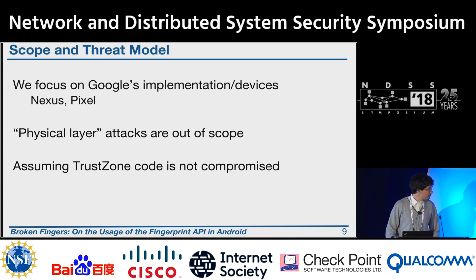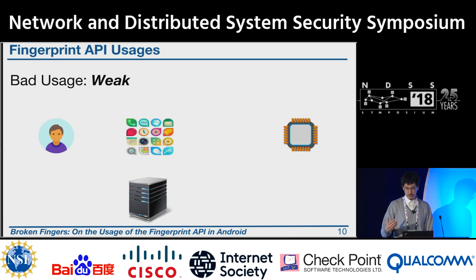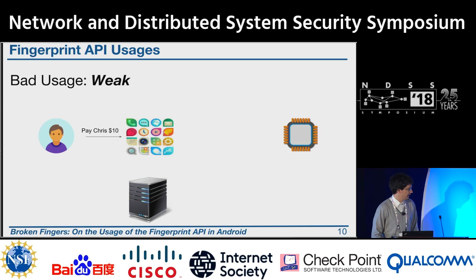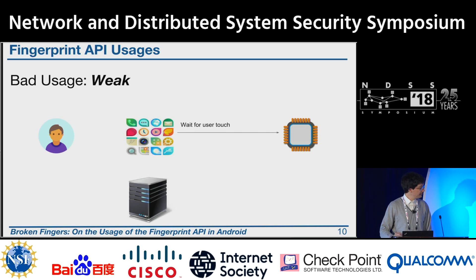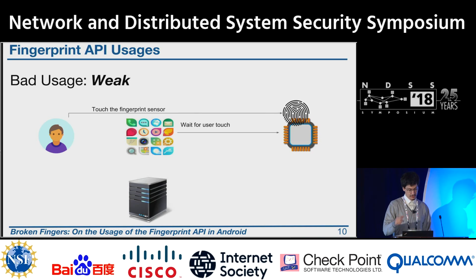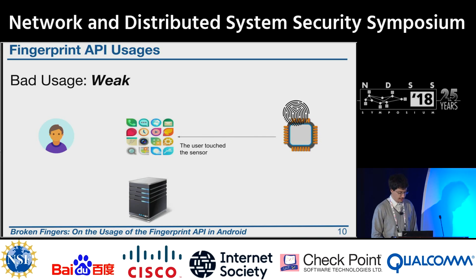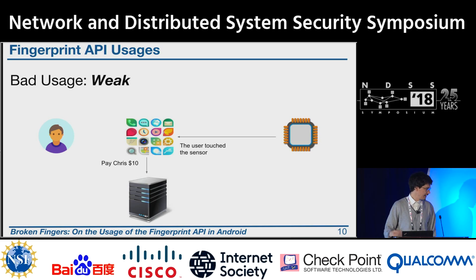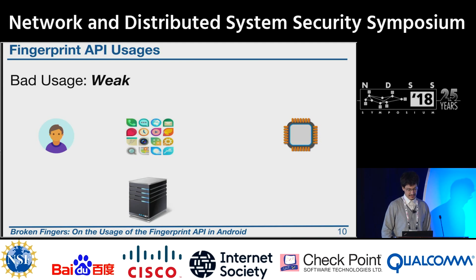The first example is what we classify as weak usage. A user wants to pay his friend Chris $10 and inserts this in an app. The app asks TrustZone to just wait for the fingerprint touch. The user touches the sensor, TrustZone sends a message back to the app saying the user touched the sensor, and the app sends a message to the back end to perform the transaction. If an attacker has root capabilities, they can easily just send a message to the back end saying they want to pay the attacker $10 instead.